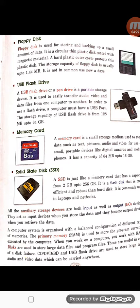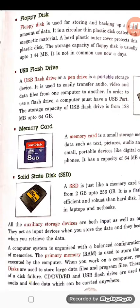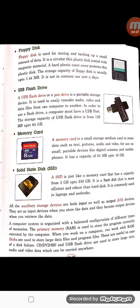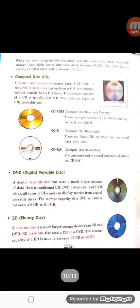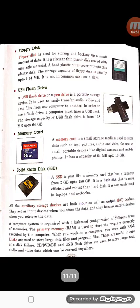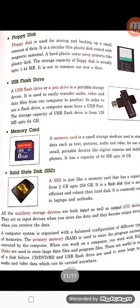The storage capacity of a floppy disk is usually up to 1.44 MB. It is not in common use nowadays because it was used before and it can hold very less memory — less than a CD. Our CD has 700 MB whereas a floppy disk can hold only up to 1.44 MB. So we do not use floppy disks today.